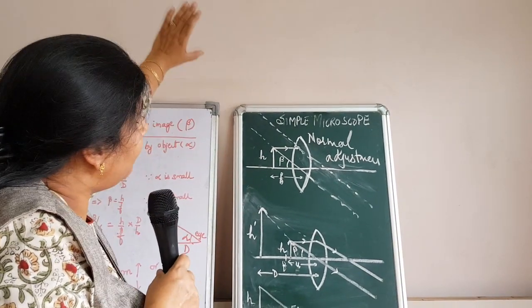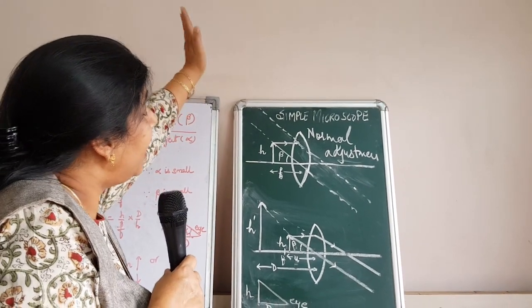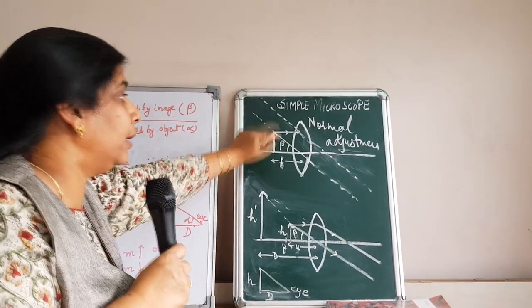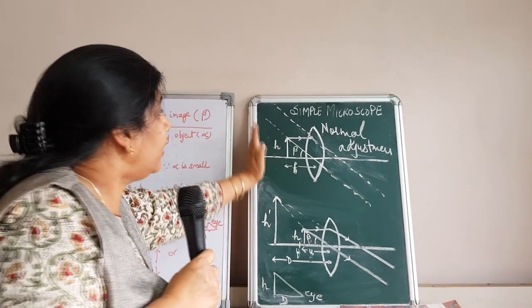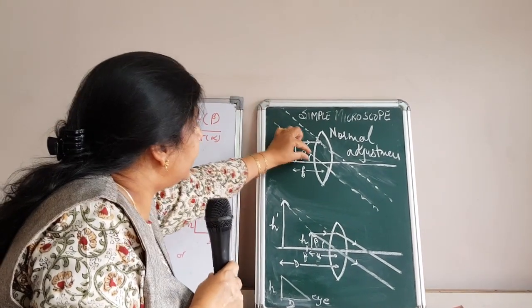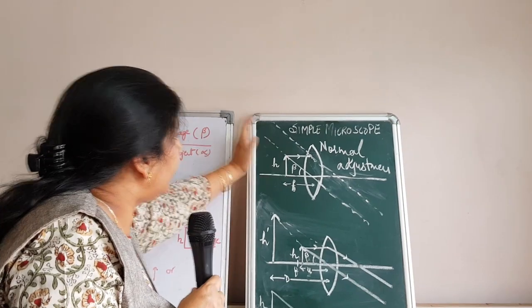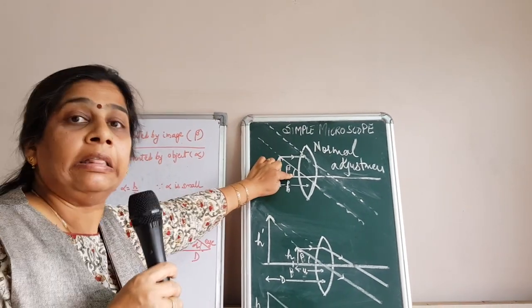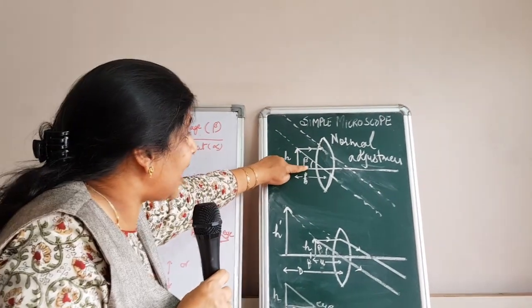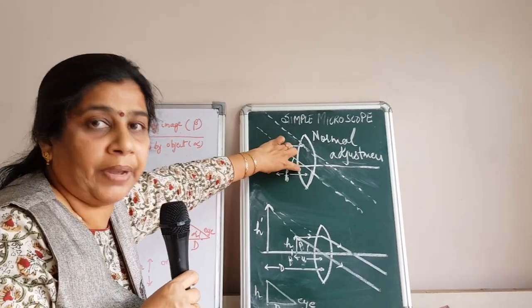Somewhere the image will be formed. The object will be formed somewhere here. This angle for this triangle and for that big triangle will remain the same. So what is tan beta for it? It will be perpendicular upon base.